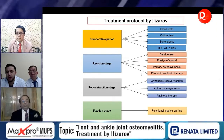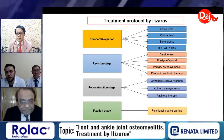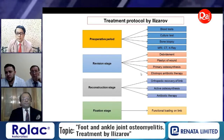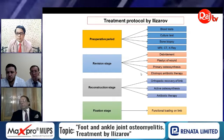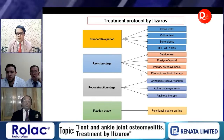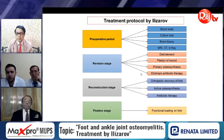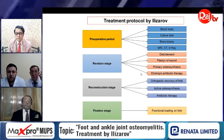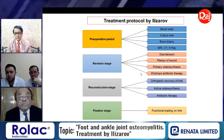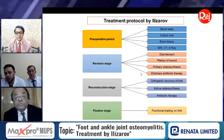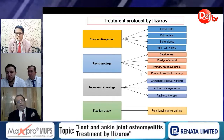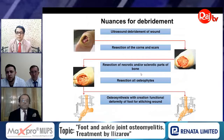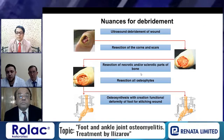For prevention of infection recurrence in the reconstruction stage, we use etiotropic antibiotic therapy for 10 to 15 days. The last stage is the fixation stage, where the patient can apply functional load to the limb, and this stage ends when we remove the external Ilizarov device. Now, some details about debridement in the revision stage.